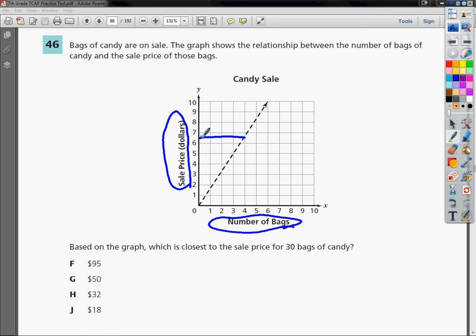The question asks, based on the graph, what is the closest to the sale price for 30 bags of candy? There's a couple ways we can go about this.